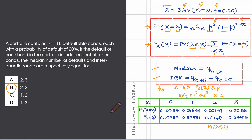This solved example demonstrated the binomial distribution and how to read its quantiles to work out the median and the interquartile range.